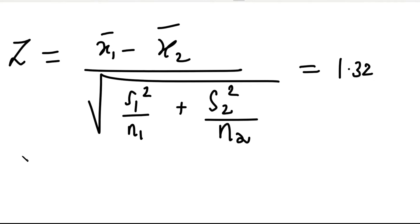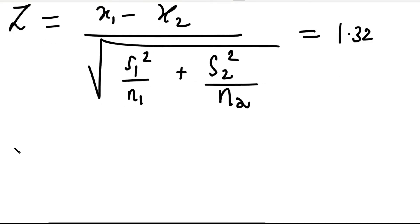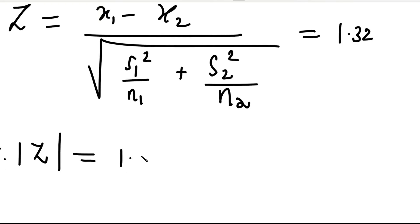We take the modulus of the calculated Z value, which gives |Z| = 1.32. This is the right-side calculated value of 1.32.